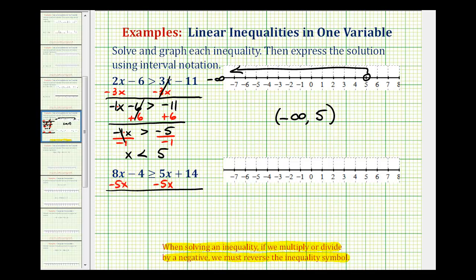So 8x minus 5x is 3x. Minus 4. Greater than or equal to, this would be zero, and we have 14.